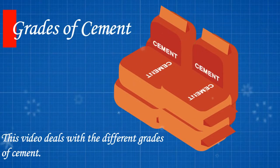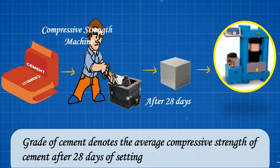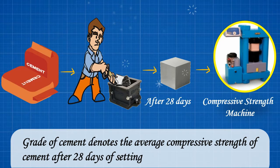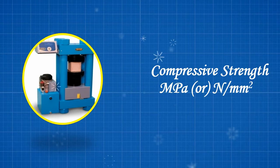Grades of Cement. This video deals with the different grades of cement. Grade of cement denotes the average compressive strength of cement after 28 days of setting. It is represented in megapascal or newton per millimeter square.